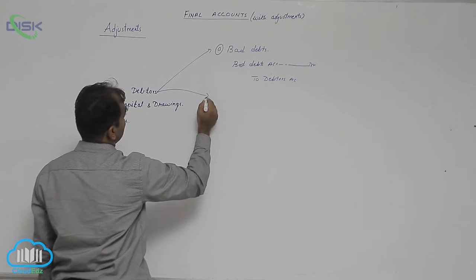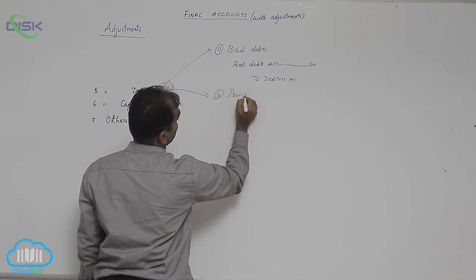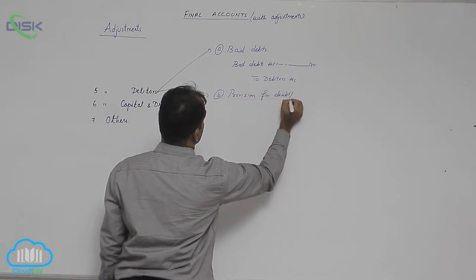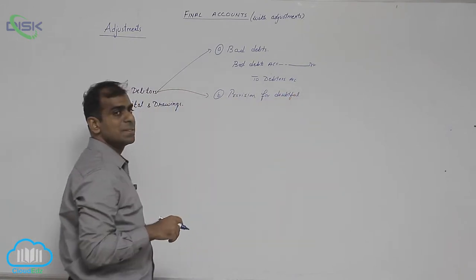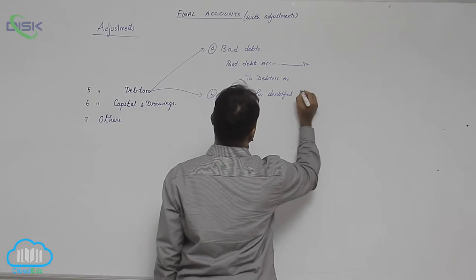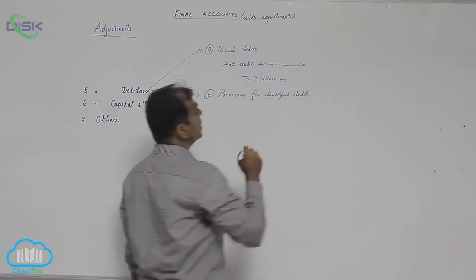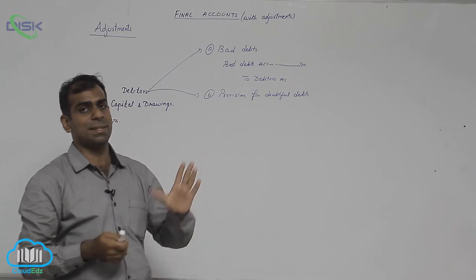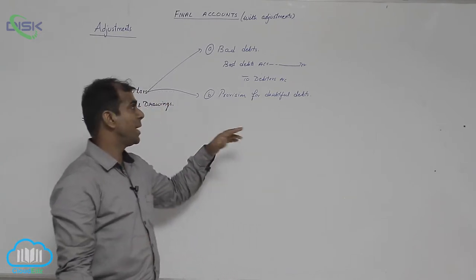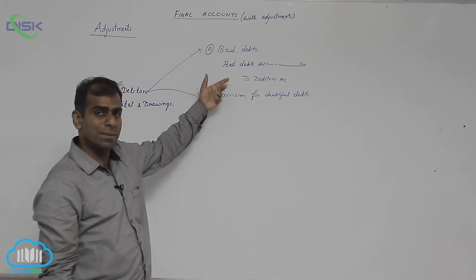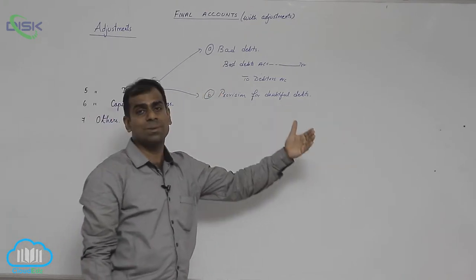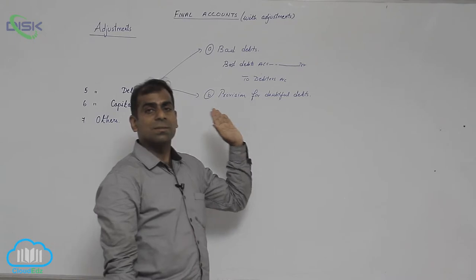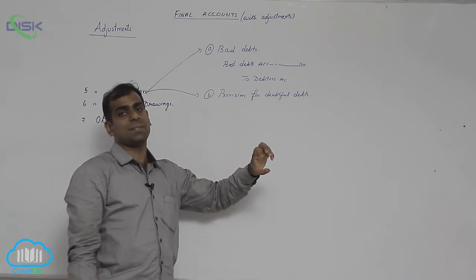We also have something called provision for doubtful debts. This provision for doubtful debts is based on the principle of conservatism. It means that if you anticipate such losses — it is not that only this year there will be bad debts, maybe next year also there will be bad debts — so you can anticipate. When you anticipate there will be a loss, the principle states that you should provide some amount for such expense.